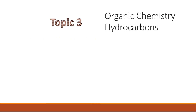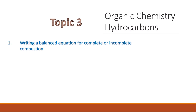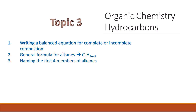Topic 3 is organic chemistry, and for this topic you only need to know about hydrocarbons. You should know how to write a balanced equation for complete or incomplete combustion. The general formula for alkanes is CₙH₂ₙ₊₂. You should know how to name the first four members of alkanes, as this is a guaranteed question. You should also know the difference in boiling points and viscosity of alkanes with increased size — both increase as the alkane gets larger.